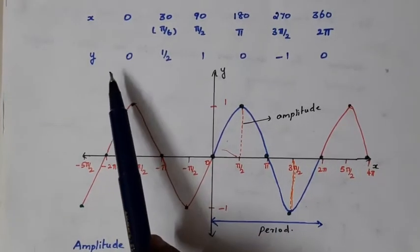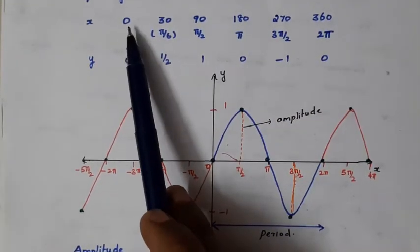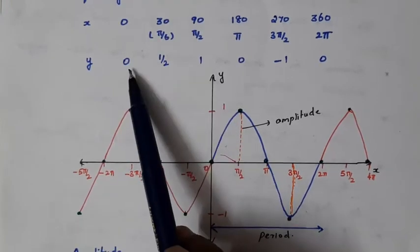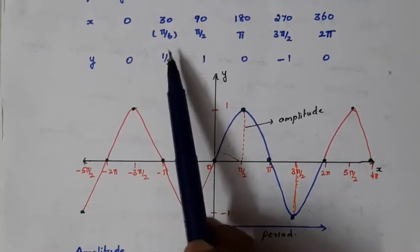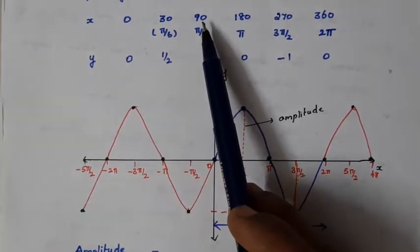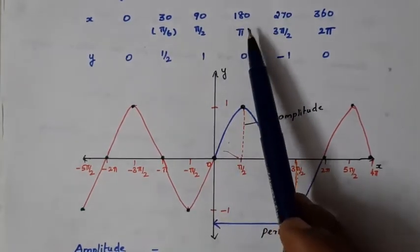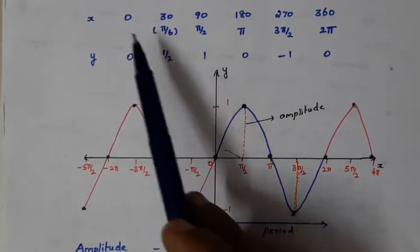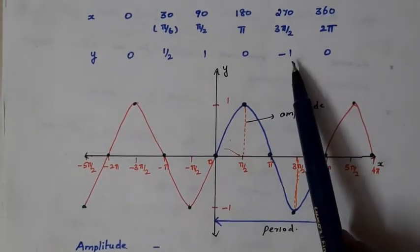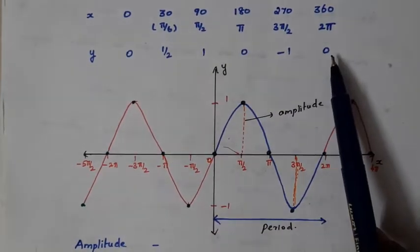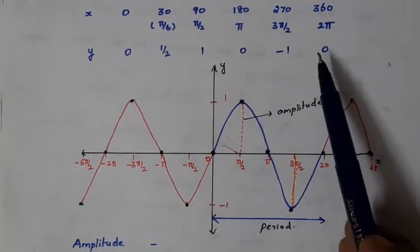Now let us find the corresponding values of y for some angles for one complete rotation. At x = 0, sine 0 = 0. At x = 30 degrees, that is π/6, sine π/6 = 1/2. At x = 90 degrees, sine 90 = 1. At x = π, sine π = 0. At x = 3π/2, sine 3π/2 = −1. And at x = 2π, y = 0. Having these values, let us plot them as points and draw the graph of the sine function.